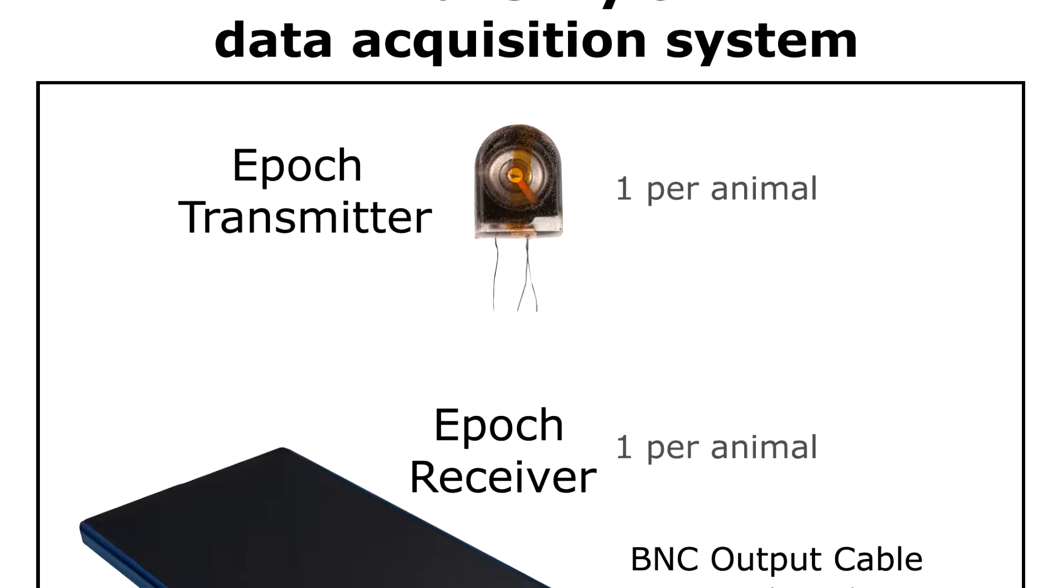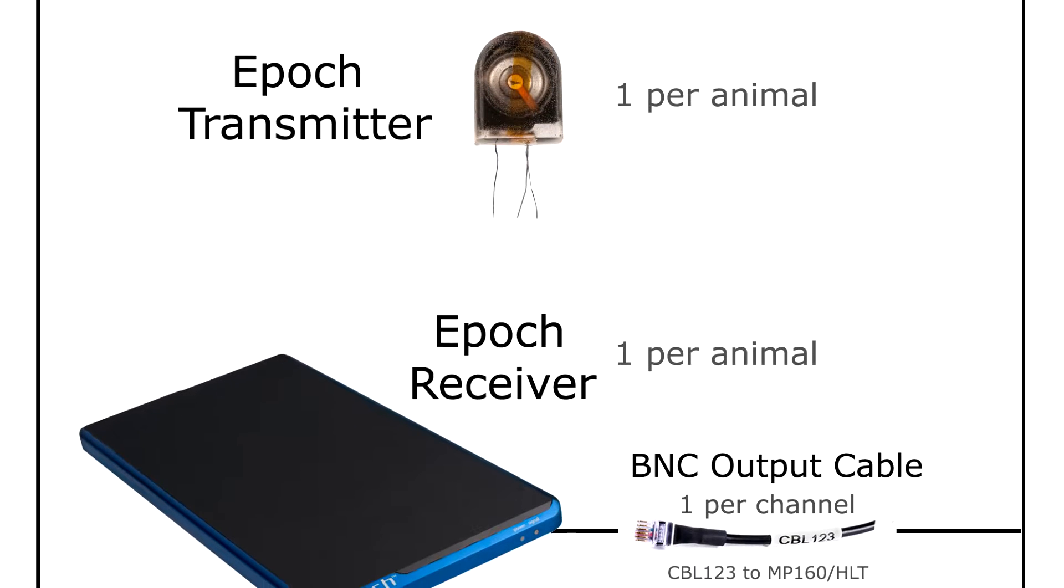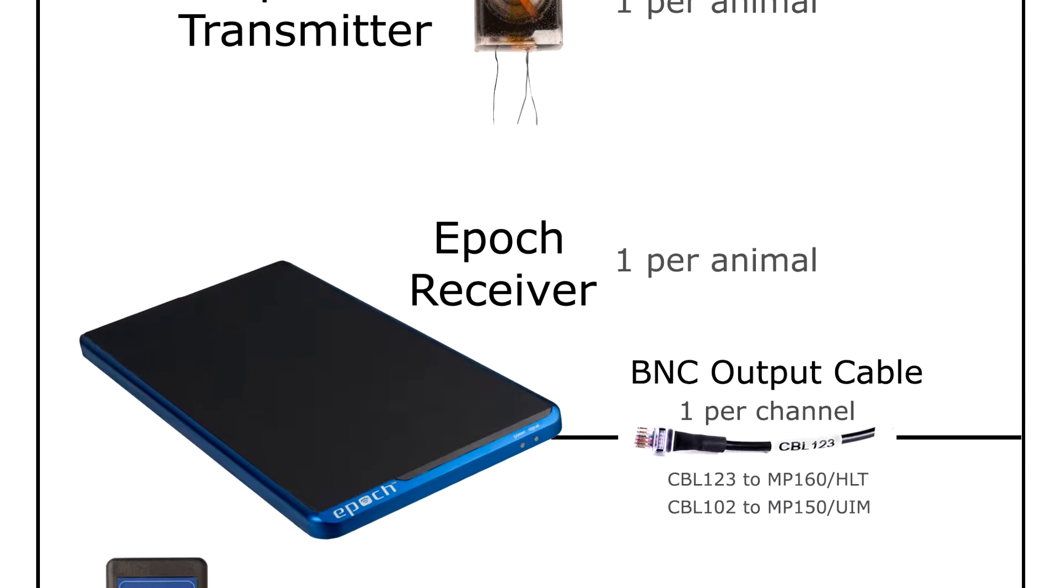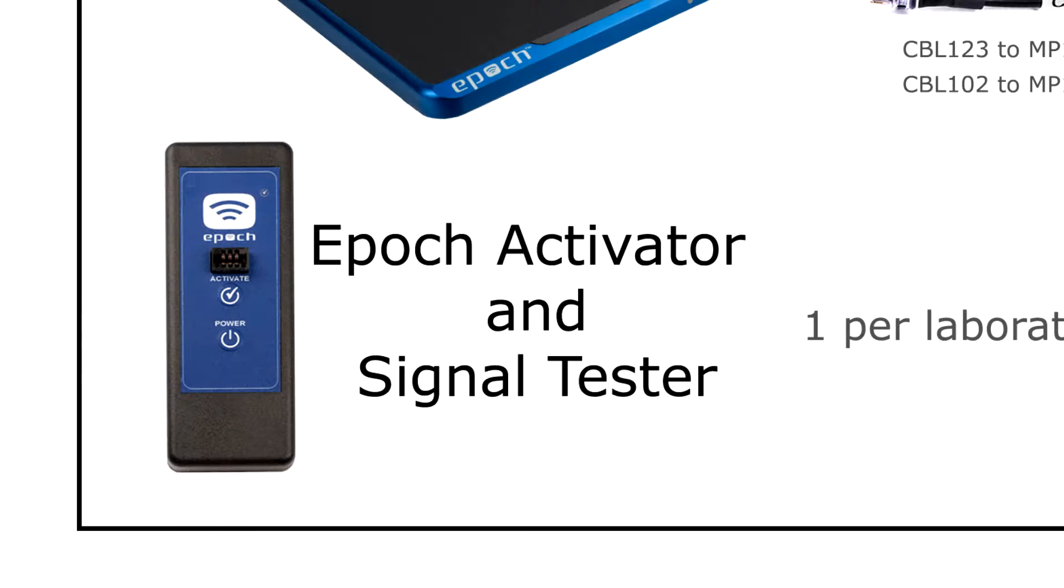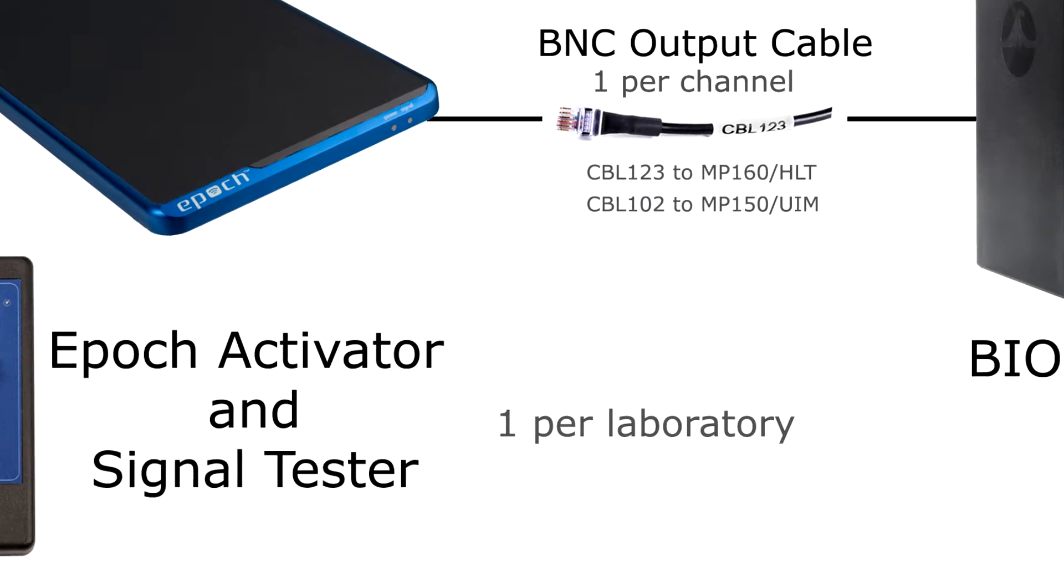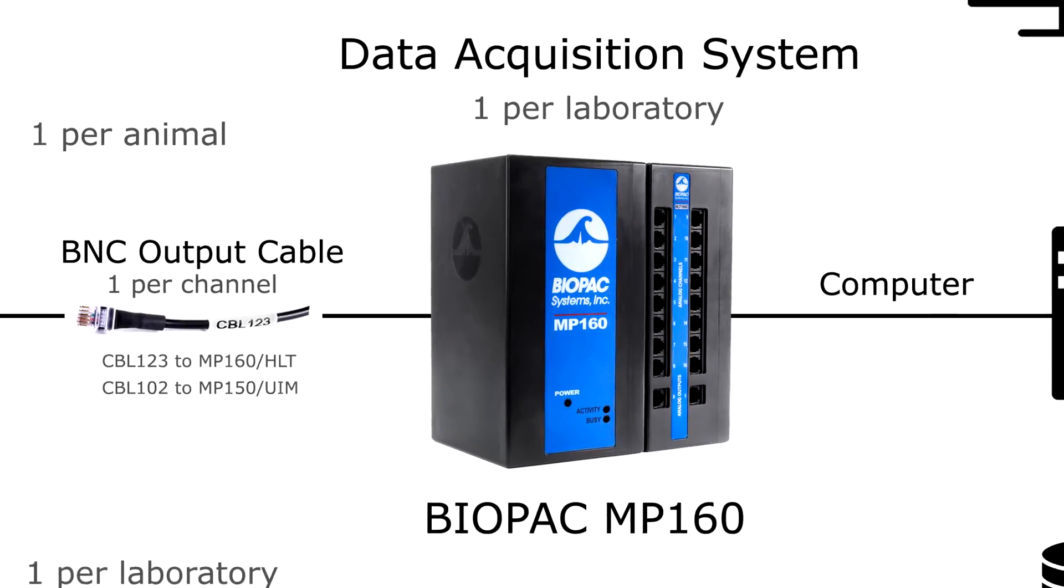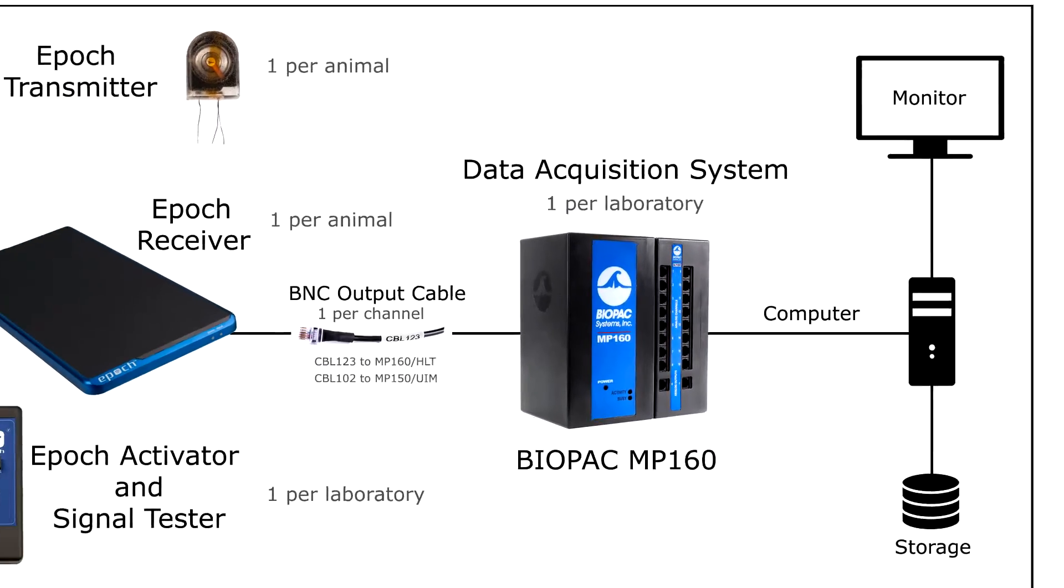To build your EPIC system, use one transmitter and receiver per animal and one BNC cable per transmitted channel for data output. Add the EPIC activator for comprehensive studies used with the Biopac MP160 data acquisition system.